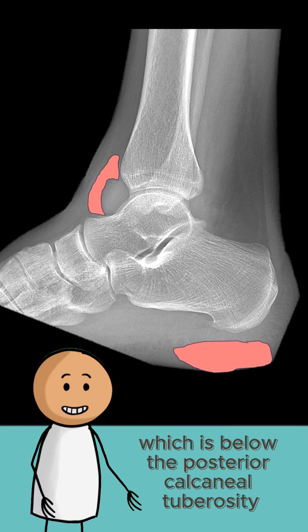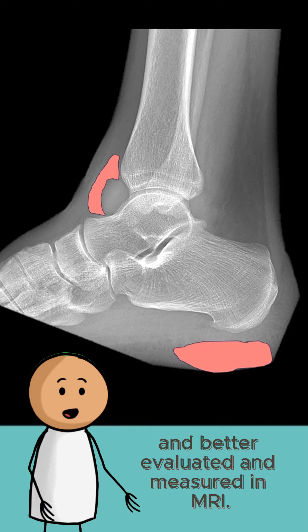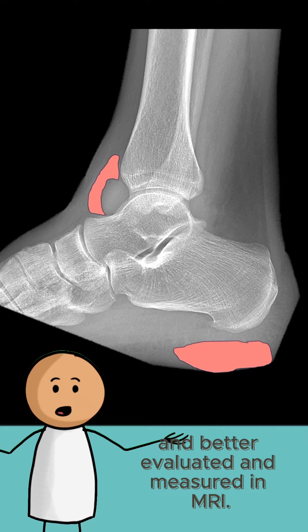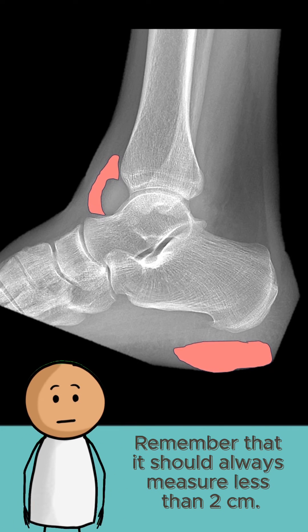The second one is the heel fat pad, which is below the posterior calcaneal tuberosity and is better evaluated and measured on MRI. Remember that it should always measure less than 2 cm.